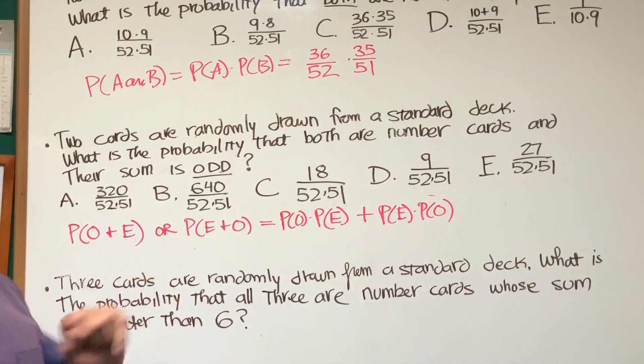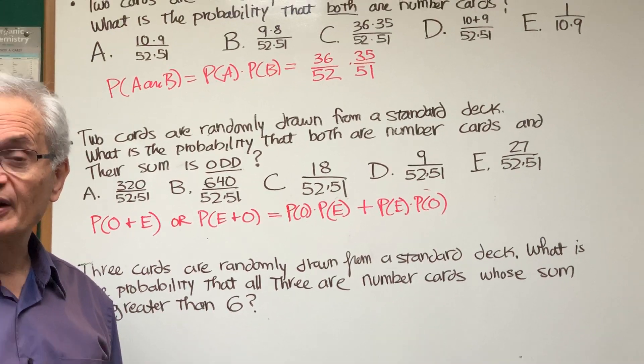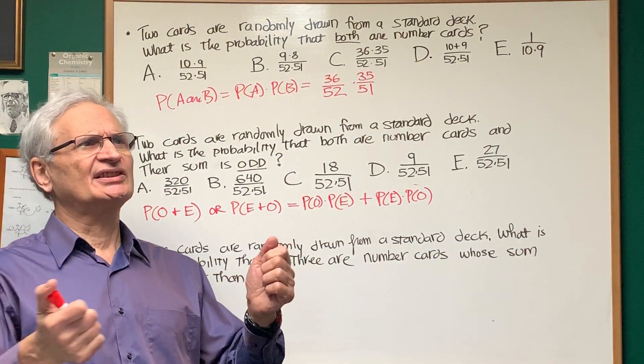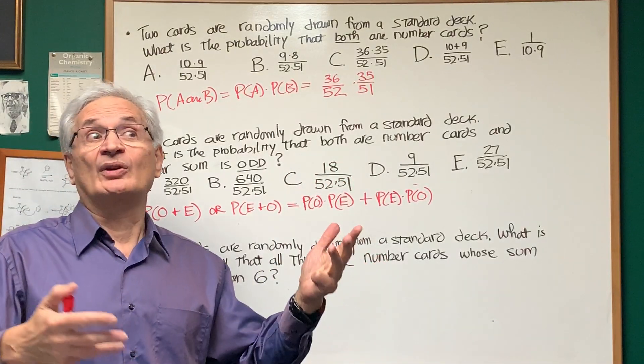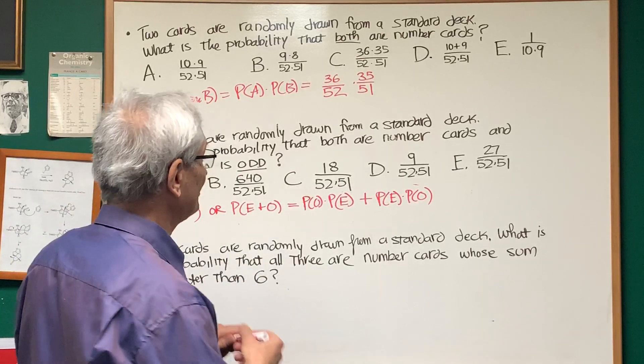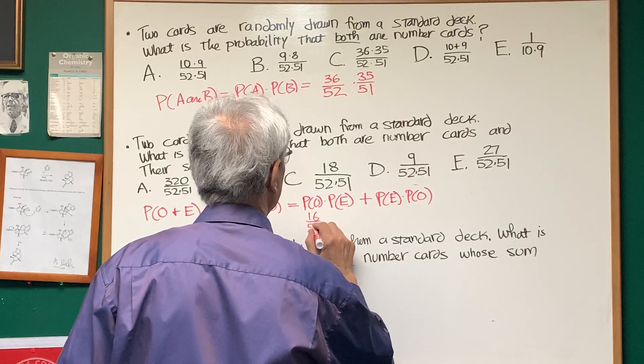All right. What's the probability of picking out an odd numbered card from a deck? How many odd numbered cards are there in a single suit? Let's see. There's 3, 5, 7, 9. There's four. Well, there's four suits. So four times four is 16. Total number of odd numbered cards in a deck of 52.